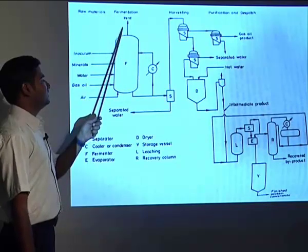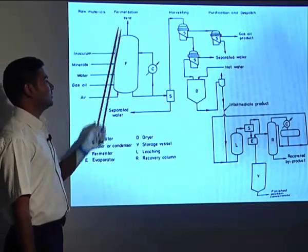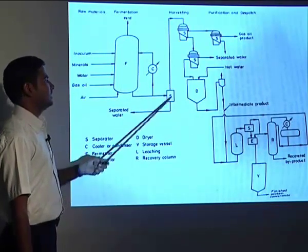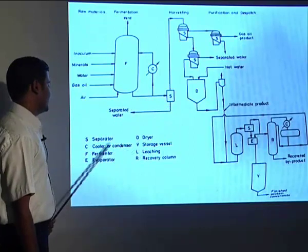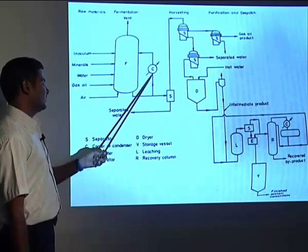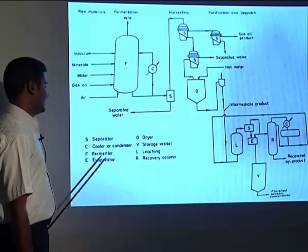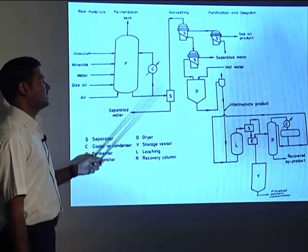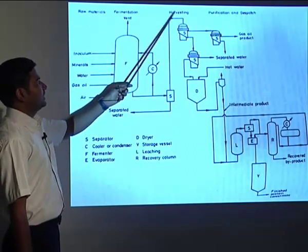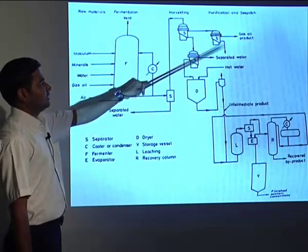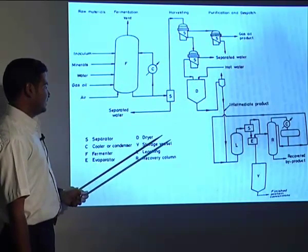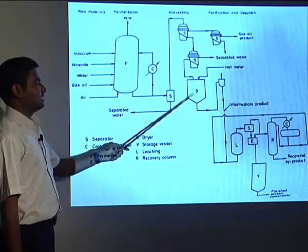The gases produced are vented out and the remaining water can be separated. The stream comes to separator S, then the cooling condenser leads to cooling of the fermenter where the reaction mixture is fermented. After fermentation it comes to another separator where harvesting takes place; gas, salt, and product are separated, water is separated, and it comes to the dryer where the protein is dried.